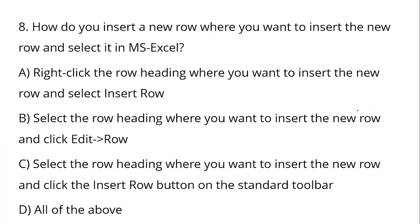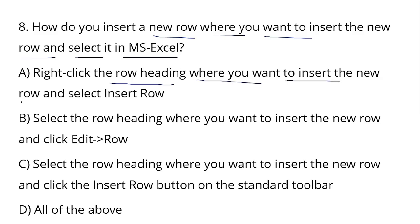Question number 8: How do you insert a new row in MS Excel? You right-click on the row heading where you want to insert the new row, then select Insert Row. Option C — right-click on the row heading and select Insert — is the correct answer.